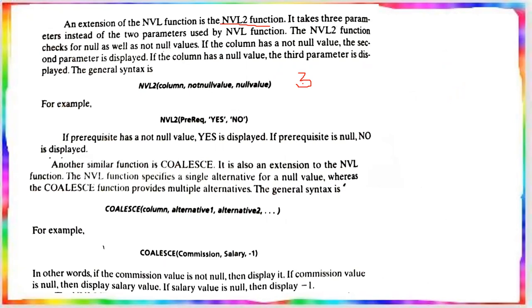In the NVL2 function, you provide the column as the first parameter. If the column is not null, the second parameter is displayed. If the column is null, the third parameter is displayed.